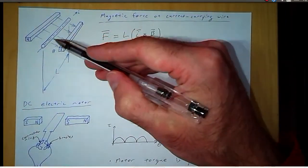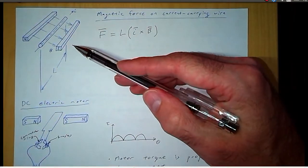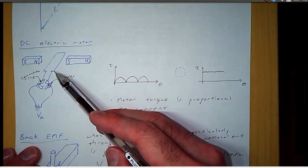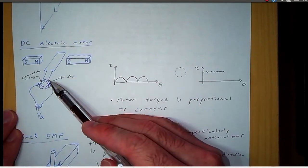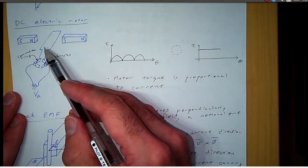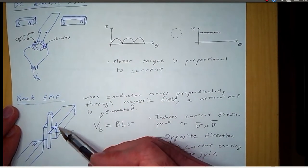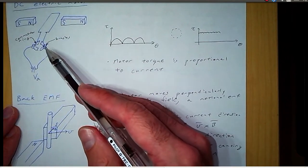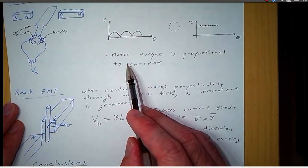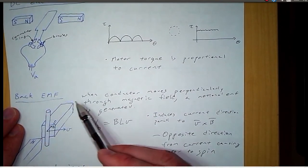To review: we have a current carrying wire in a magnetic field. When the current is perpendicular to the field, a force is generated. We use two wires with current going in different directions separated by a moment arm, which generates a torque that spins the rotor. However, once that wire is moving in a magnetic field, a back EMF is generated. That back EMF induces a current in the opposite direction of our applied current, and since motor torque is proportional to the current through the armature, the back EMF reduces the torque.